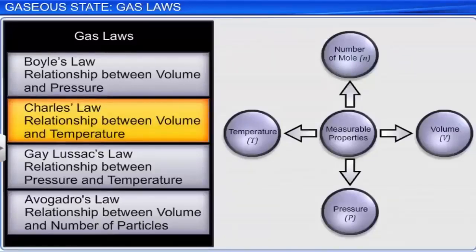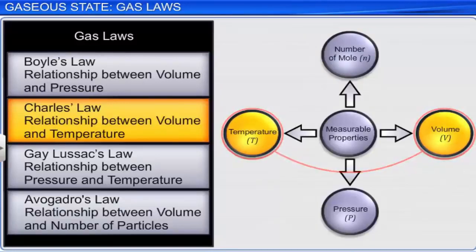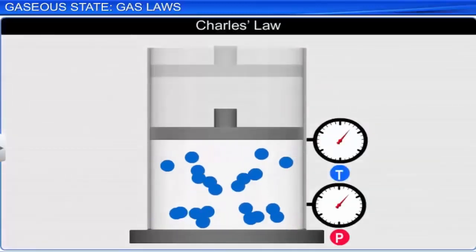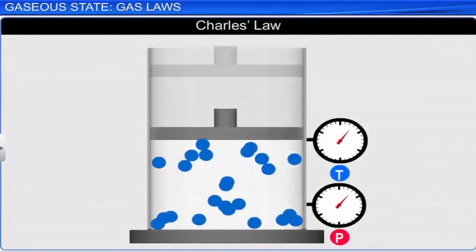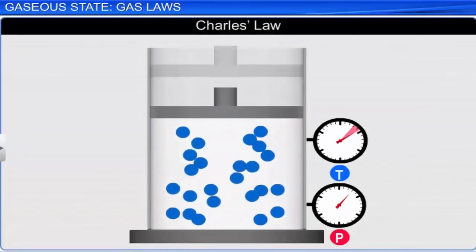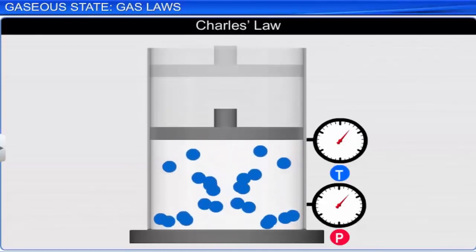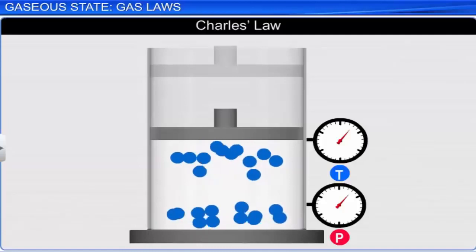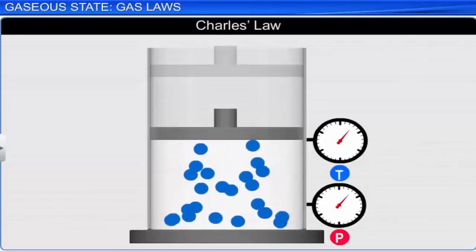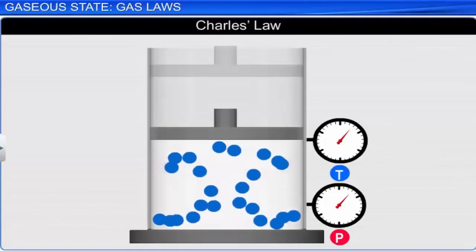The next law is Charles' law, which describes the relationship between the volume of a gas and its temperature. Jacques Charles and Gay-Lussac studied the relationship between volume and temperature of gases independently. They concluded that for a fixed mass of gas at constant pressure, the volume of gas increases with increase in temperature and decreases on cooling. They found that when pressure remains constant, a fixed mass of any gas expands or contracts by 1/273 of its volume at 0°C for every rise or fall in temperature by 1 degree Celsius.